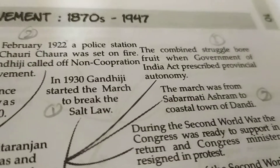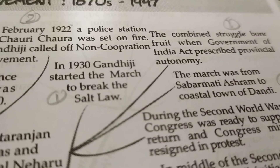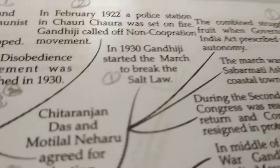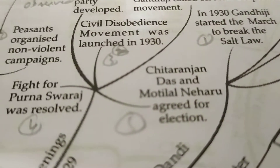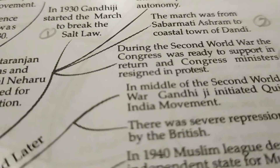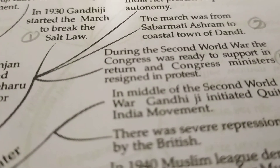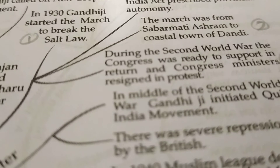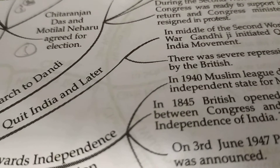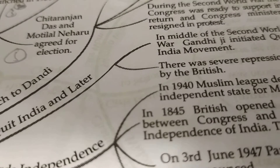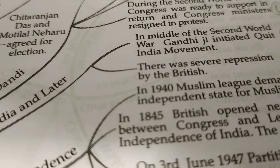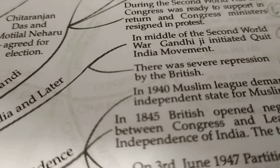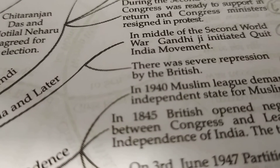The combined struggle bore fruit when the Government of India Act prescribed provincial autonomy. During the Second World War, Congress was ready to support the British in return, but Congress ministers resigned in protest because their demand was not accepted. Then, in the middle of the Second World War, Gandhiji initiated the Quit India Movement. There was severe repression by the British, and Gandhiji was put into jail.